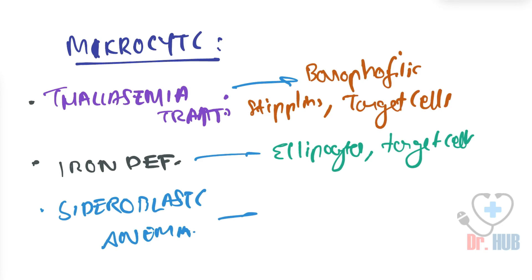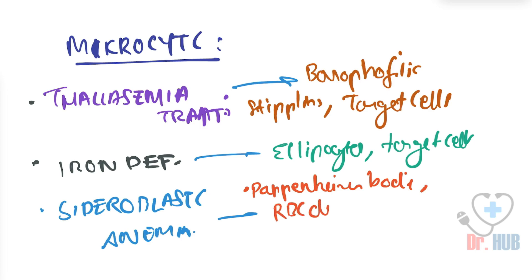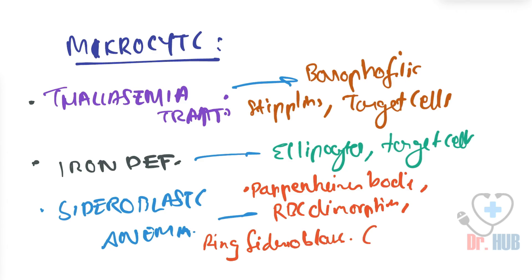For sideroblastic anemia, the peripheral smear includes Pappenheimer bodies, RBC dimorphism, and ringed sideroblasts. The ringed sideroblasts are identified using the Perl's stain.